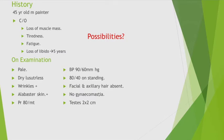Pale, dry skin with wrinkles — alabaster skin is seen in hypothyroidism and hypopituitarism. However, in hypothyroidism you get pallor plus a yellow tinge due to hypercarotinemia, and the skin is dry and scaly — not shiny like alabaster skin.